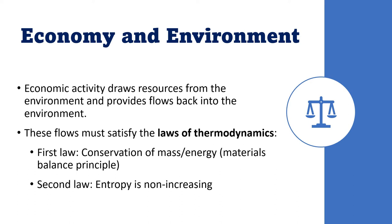We can discuss our economy and environment with respect to the laws of thermodynamics, using a food chain or ecosystem as an example. The first law states that energy and mass are conserved — energy is not created or destroyed, but converted into another form. Producers capture about one to two percent of solar energy into biomass, and only ten percent of energy is transferred to higher trophic levels, with the rest converted into other forms.